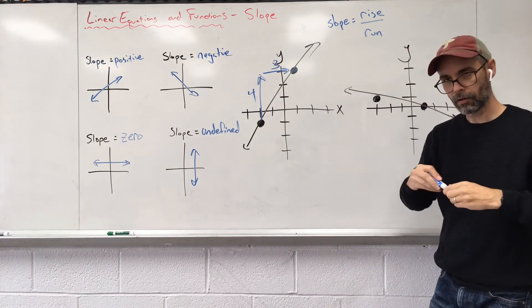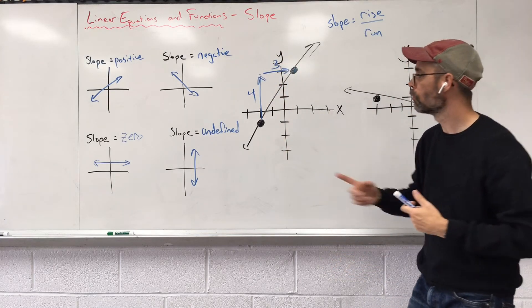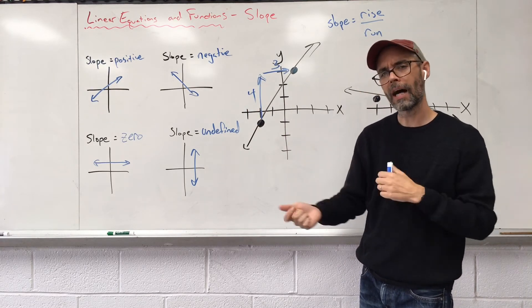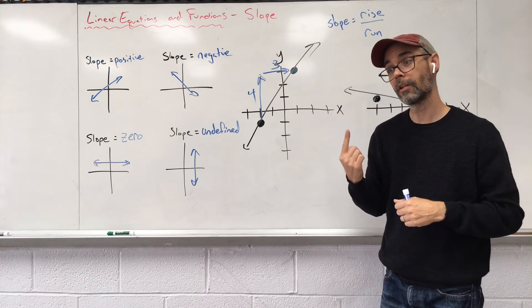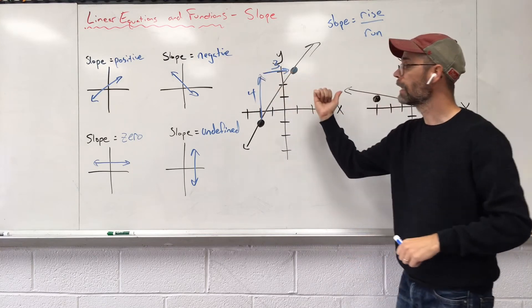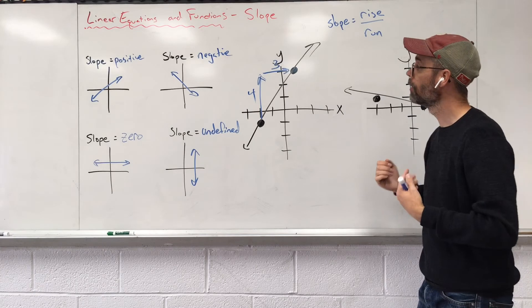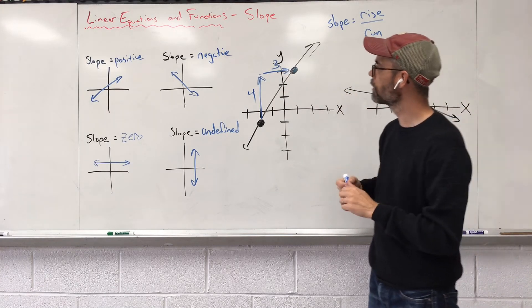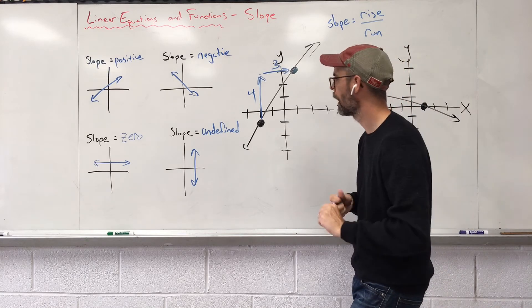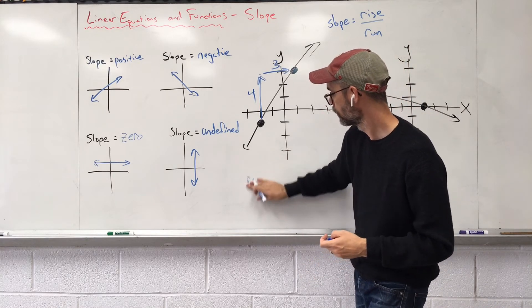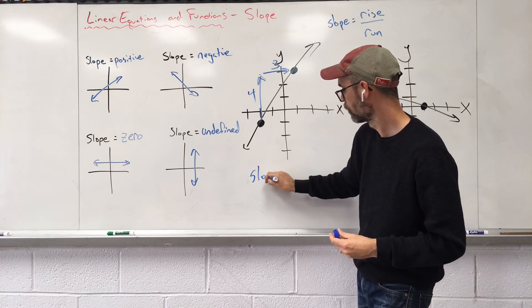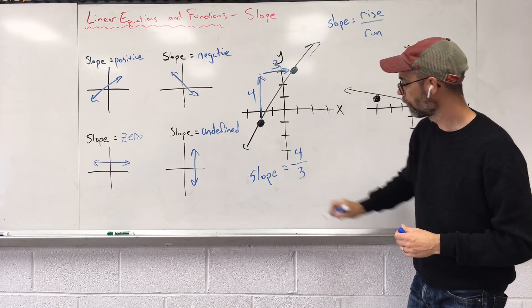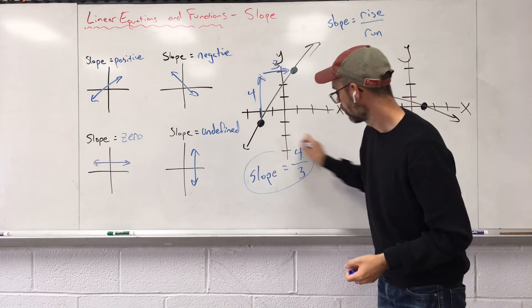We need to take into account the direction that we're moving. If we're going upwards, that four could either be positive or negative. Going up is usually good, positive. Moving to the right, if you look at a number line, numbers to the right is a positive direction. Both of these are positive. What kind of slope do we have? If we go up four, we run three, we have a positive four over three.